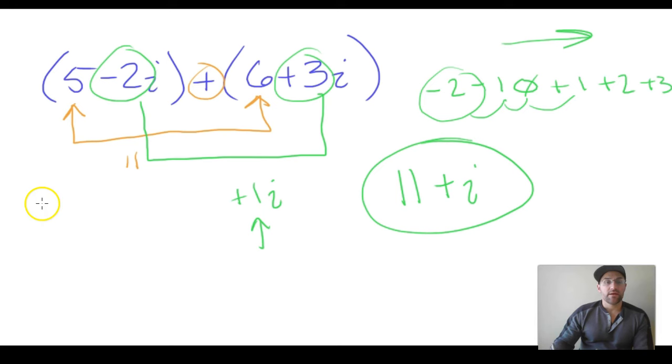Remember, a coefficient is anytime we have a number or a fixed value, a constant term, attached to a variable term. Now this isn't really variable—this is always a square root of negative 1—but we still treat it like a variable, it's a letter. So a coefficient is anytime we have a number attached to some letter by way of multiplication.